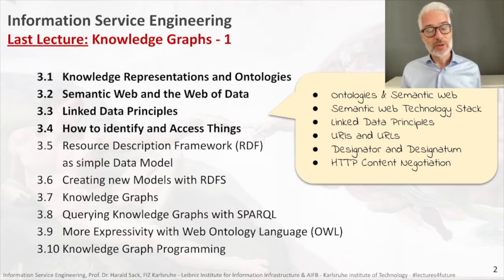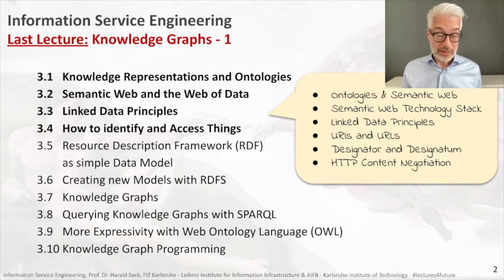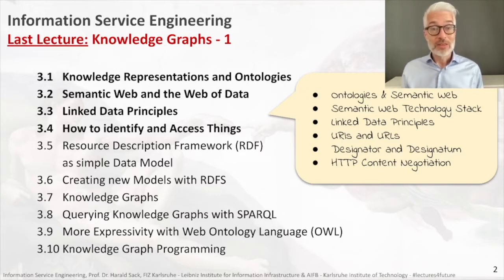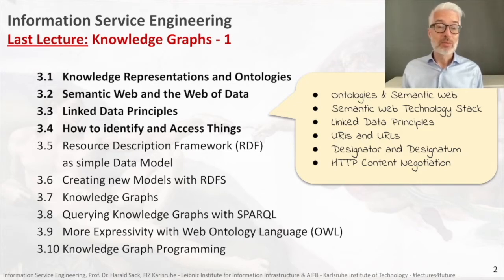We learned the difference between a URI — a uniform resource identifier — and a URL — a uniform resource locator. A URI identifies what exists and can be put on the web, while the URL tells you what exists on the web. To go deeper into that you have to watch the previous lecture. We also covered how we identify and access things on the web based on URIs, and there we learned the difference between designator and designatum.